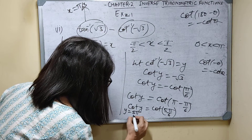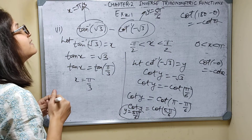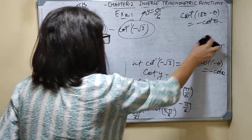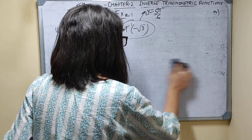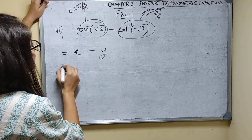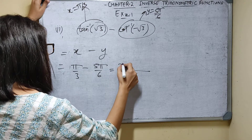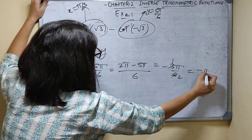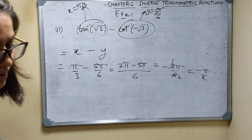Now x minus y = pi by 3 minus 5 pi by 6. LCM is 6, so this is (2 pi minus 5 pi) by 6 = minus 3 pi by 6 = minus pi by 2. The answer is minus pi by 2.